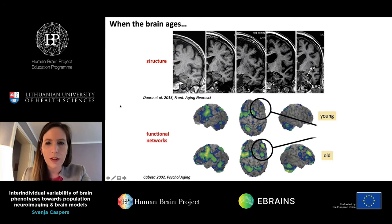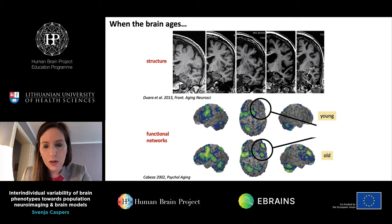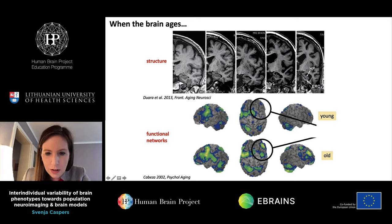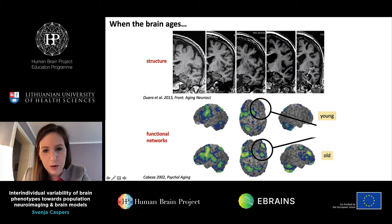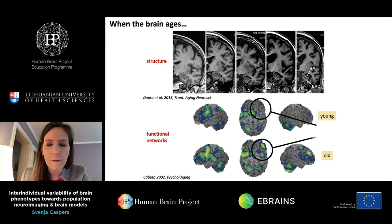Not only does our brain decline in structure, it also shows reorganizations in its functional architecture. We have functional brain networks composed of different brain regions — for example, a network involving the frontal cortex, parietal cortex, and occipital cortex working together to form a network, in this case for working memory: remembering a few things for a very short amount of time.